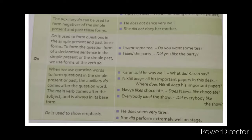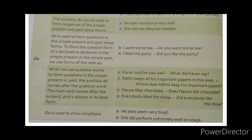'Do' can be used to form negatives of simple present and past tense. For example, 'He does not dance very well' — 'does not' is the auxiliary verb. 'Do' is also used to form questions in simple present and past tense — for example, 'Do you want some tea?' or 'What did Karan say?' and 'Where does Nikhil keep his important papers?' 'Do' is also used to show emphasis — for example, 'He does seem very tired' — emphasizing 'tired.'